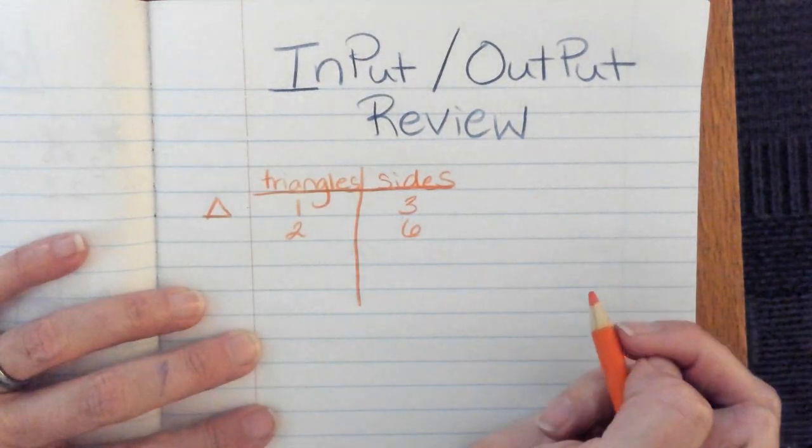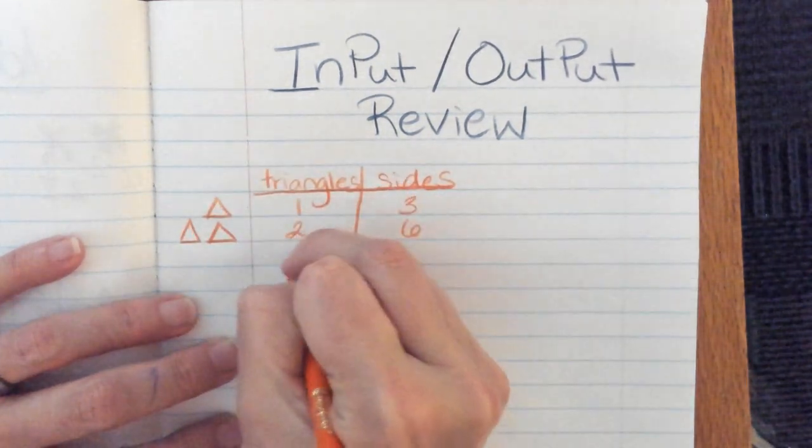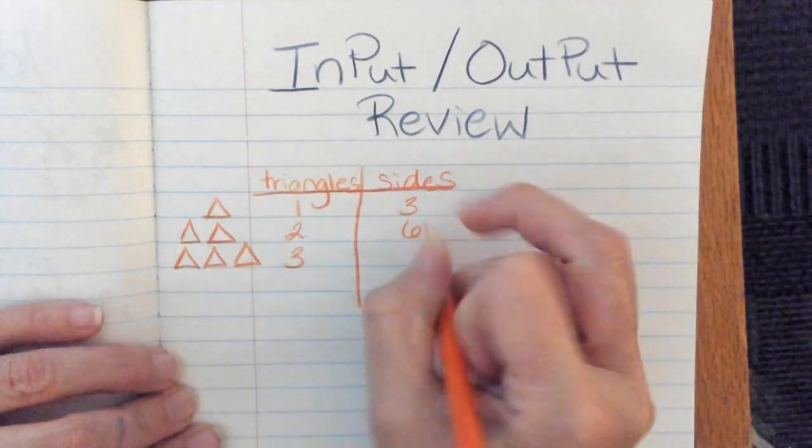Like one triangle, three sides, two triangles, six sides, three triangles, one, two, three, four, five, six, seven, eight, nine sides.